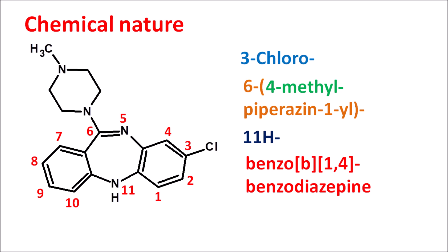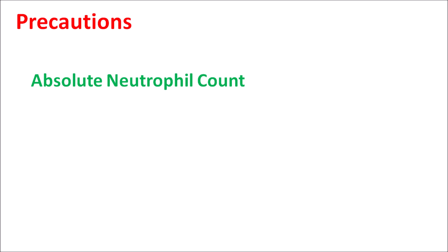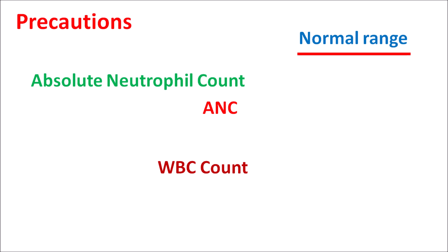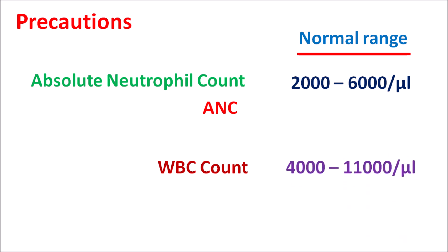Before prescribing clozapine, a blood test should be done to assess absolute neutrophil count (ANC) as well as WBC count. These two counts should be done before administration of clozapine. The normal range for ANC is 2,000 to 6,000 cells per microliter, and for WBC it is approximately 4,000 to 11,000 cells per microliter. These are the normal values in healthy people.